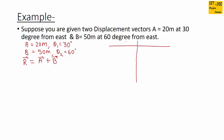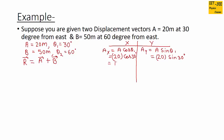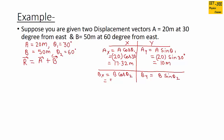First we will find the x and y components of each vector using a table. The formula for ax is a cos theta and for ay is a sin theta. With a equals 20 meters and theta equals 30 degrees, we get ax equals 17.32 meters and ay equals 10 meters. For vector b, bx equals b cos theta and by equals b sin theta. Plugging in 50 cos 60° gives 25 meters, and 50 sin 60° gives 43.3 meters. You can use a calculator for these values.